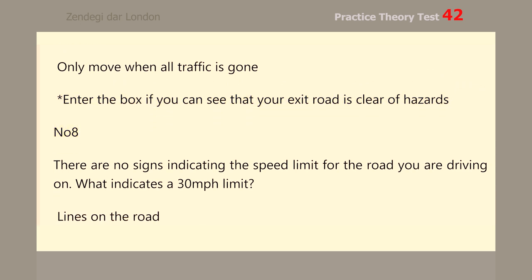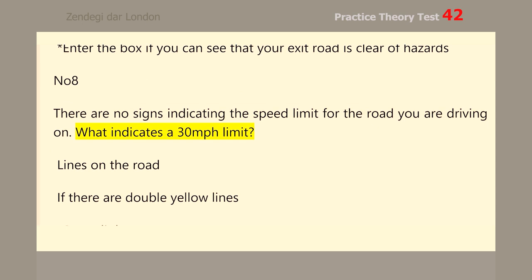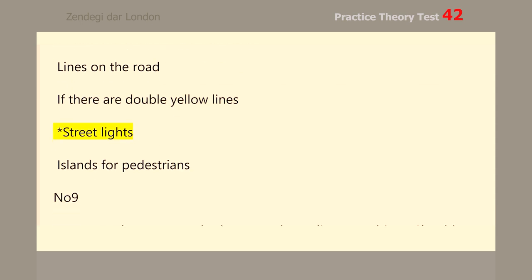Number 8. There are no signs indicating the speed limit for the road you are driving on. What indicates a 30 miles per hour limit? Street lights.